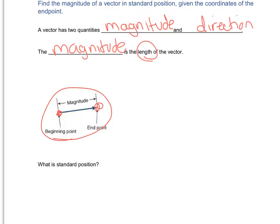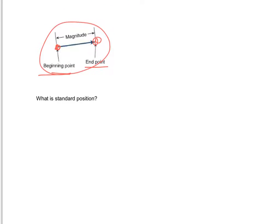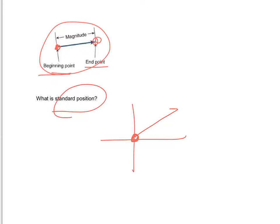In this book, they just refer to them as the beginning and the end point. For any vector, you can place it anywhere in the XY plane. But if they tell you that you are in standard position, that means your beginning point is at the origin and your ending point will be somewhere in the coordinate system. Standard position means you need to start at the origin when you draw your vector.